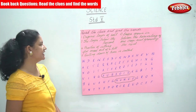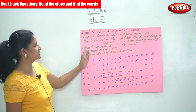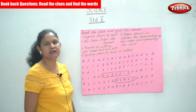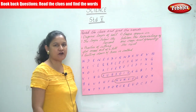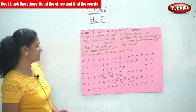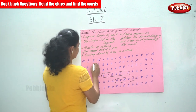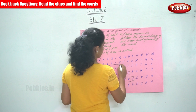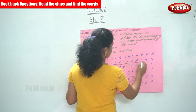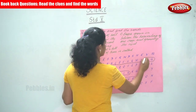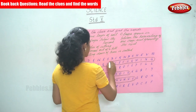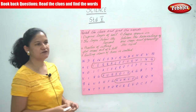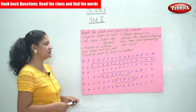The next clue is: the practice of cutting flat areas out of a hill. That is terrace farming. T-E-R-R-A-C-E, terrace. F-A-R-M-I-N-G, farming. Terrace farming is the practice of cutting flat areas out of a hill.